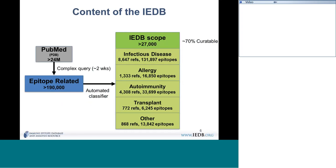The content of the IEDB primarily comes from PubMed. We do a query every week for new data that was recently published, and we also query PubMed for new 3D structures of binding epitopes. With our keyword query we retrieve around 190,000 references, which are then classified by automated classifiers that look for keywords to determine if the manuscript is likely to be relevant to infectious disease, and from there they are manually scanned and curated.